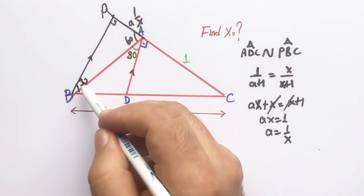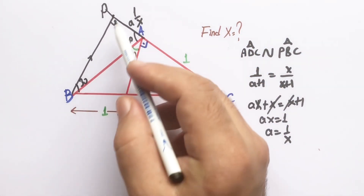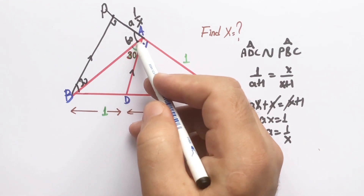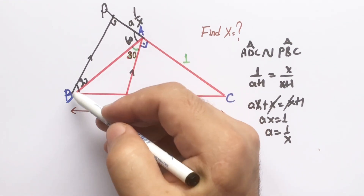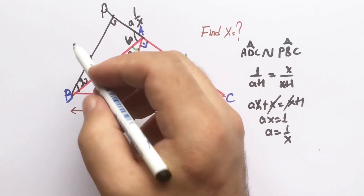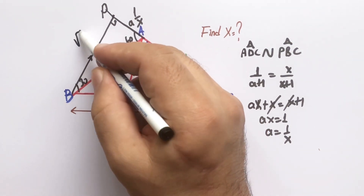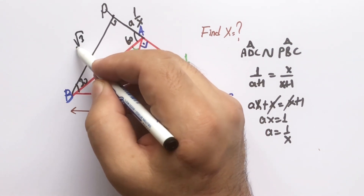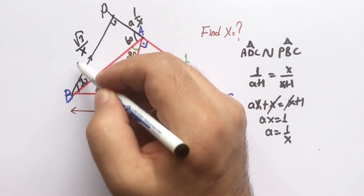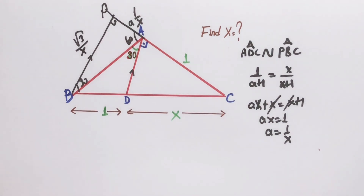Here we have 1 over x across the 30 degrees. Across the 60 degrees it must be equal to √3 over x.